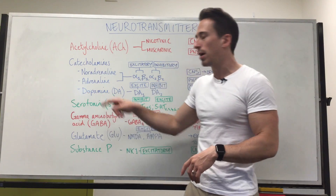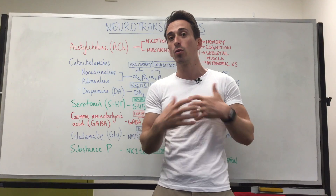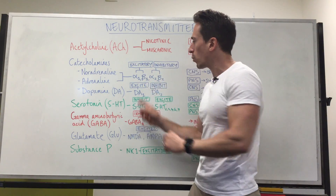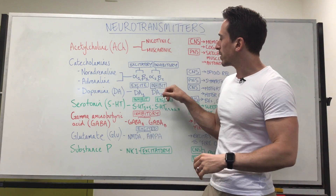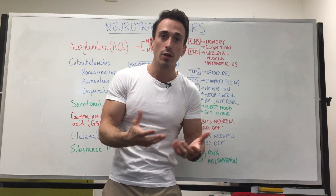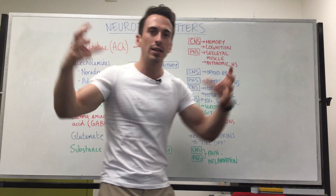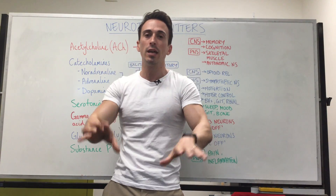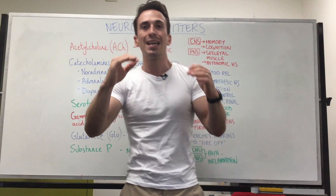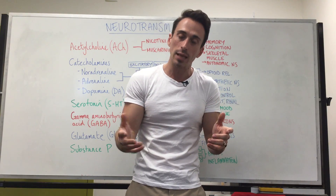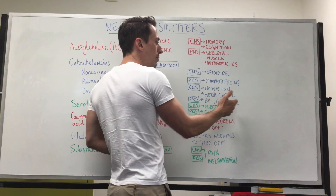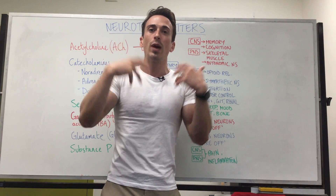Looking at another catecholamine — dopamine — probably known as our reward or feel-good molecule, and it does play a role in all of these. There are two major types of dopamine receptors: dopamine 1 (excitatory) and dopamine 2 (inhibitory). In the central nervous system, dopamine is involved in motivation, reward, and motor control. It's found in a deep part of the brain called the basal ganglia, where it initiates and smooths out motor movement. In Parkinson's disease, the neurons that make dopamine are dying off, making it hard to initiate movement and smooth it out — causing resting tremor, postural instability, and shuffling gait. In the peripheral nervous system, dopamine plays a role in blood vessel diameter, GIT motility, and the kidney's ability to excrete sodium.